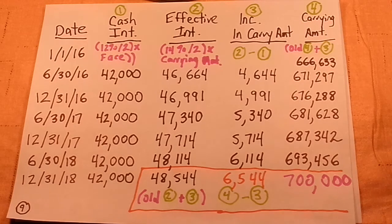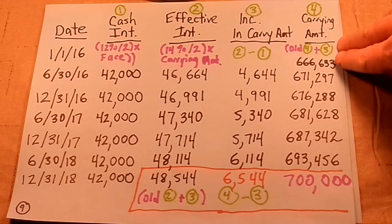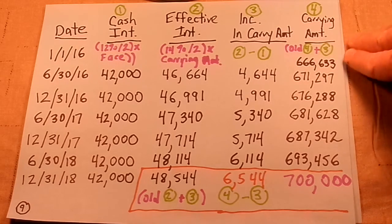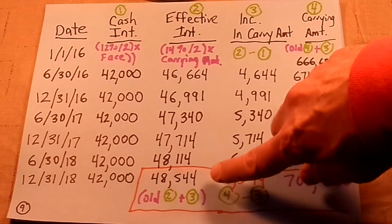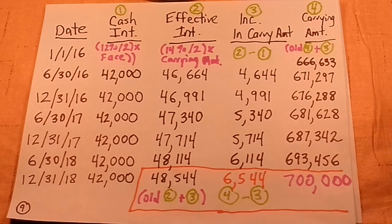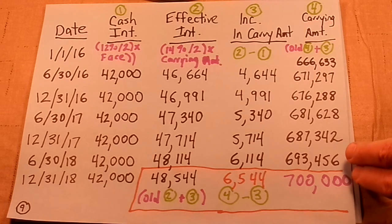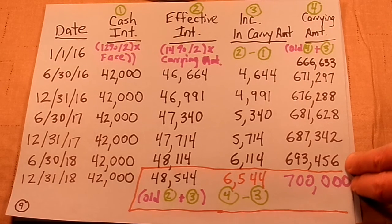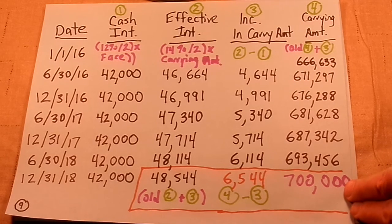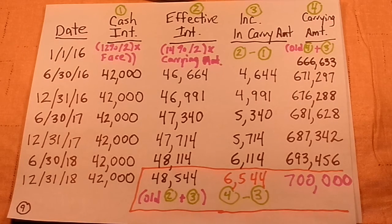Notice at the very last entry we no longer strictly follow the standard formulas. For the very last payment only, cash interest is calculated the same, but the critical thing is we cannot have a carrying value lower or higher than $700,000. So in the last period only, we go from the previous carrying amount to exactly $700,000, amortizing whatever remaining discount balance is left.